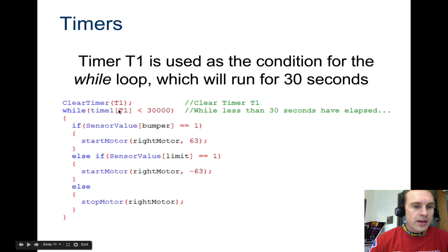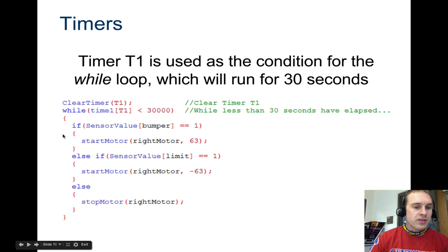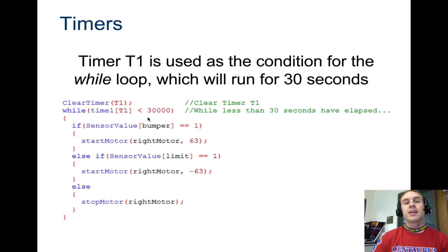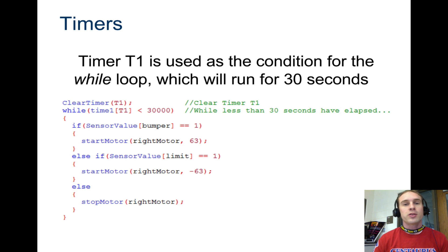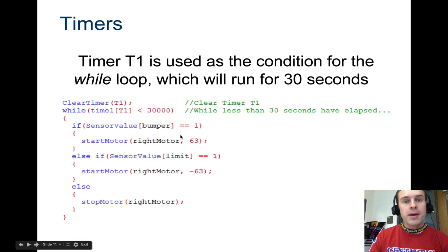Now we're going to say while time one — in brackets T1 — while that is less than 30,000 milliseconds. It's always going to be in milliseconds, so that's while less than 30 seconds — a key thing to remember. While that's happening, it runs this code, constantly checking to see if the sensor value of the bumper or limit switch is pushed in, which is a one, for only 30 seconds. This is great code to use if you want to make a toy — maybe a stuffed animal with robotics. You push a button and it does something for a certain amount of time, then stops.